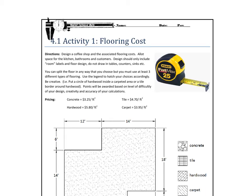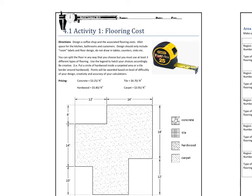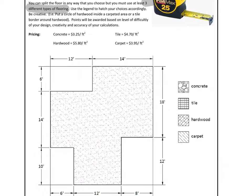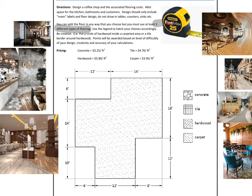Here's a quick introduction to this activity. You're going to be designing the flooring in a coffee shop. There are going to be different areas and you can use different types of flooring. You'll want to figure out where the tables are, where the counter is, where the sinks are. You're going to split the floor any way you want using three different types of flooring. Use the legend to the right to draw a picture, then figure out how much it all costs by finding the area of each section.